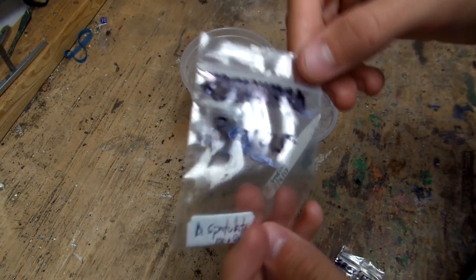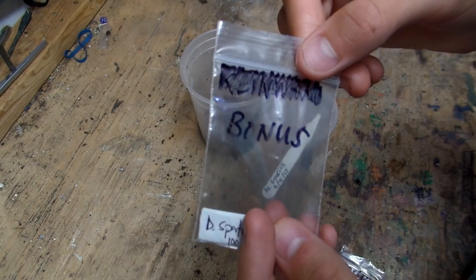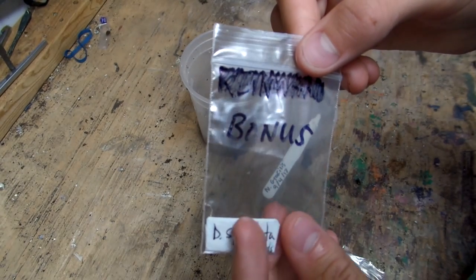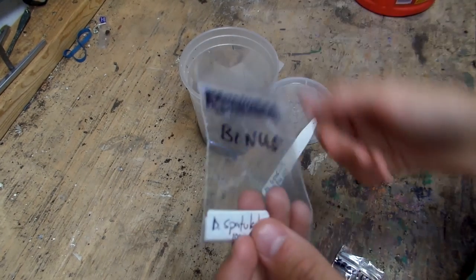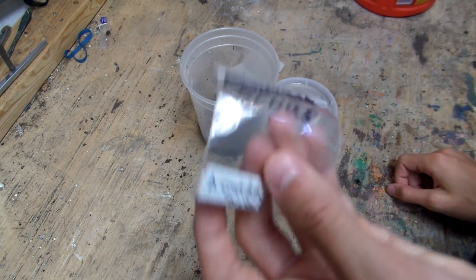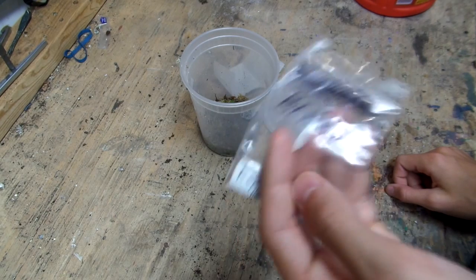And then you send a SASE. So you get an envelope, and you put my address on it with a stamp, and another envelope with your address on it and a stamp, and put that one in the envelope with my address and mail it to me. I'll put the seeds in it and send it right back to you.